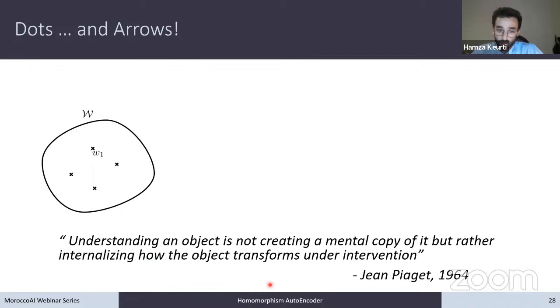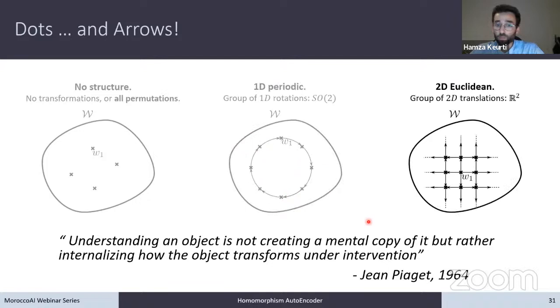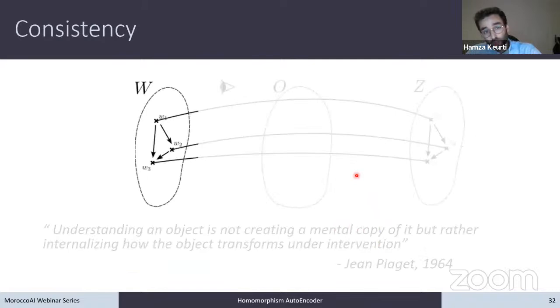So dots and arrows. I like to always bring back this quote from this developmental psychologist, Jean Piaget, which has the following: Understanding an object is not creating a mental copy of it, but rather internalizing how the object transforms under intervention. So again, emphasis on transforms, transformations, arrows. So let's have an example. So this set here, no structure, there is just a bag of different points. So no transformations or the set of all invertible transformations, all permutations of this space. Or it could be a 1D periodic space, right? And so 1D rotations, SO2, would be the set of transformations. I could be dealing with a grid, like a sort of lattice or even like a continuous mesh, which is the 2D Euclidean space. And here it would be the group of 2D translations. So arrows, important.